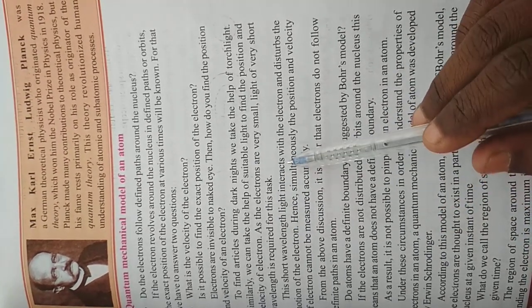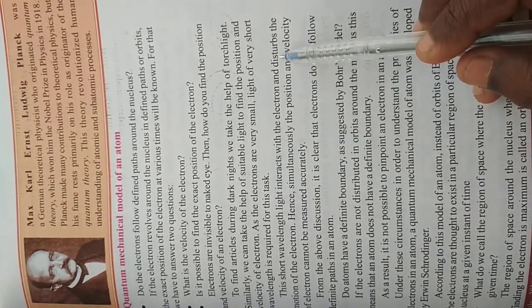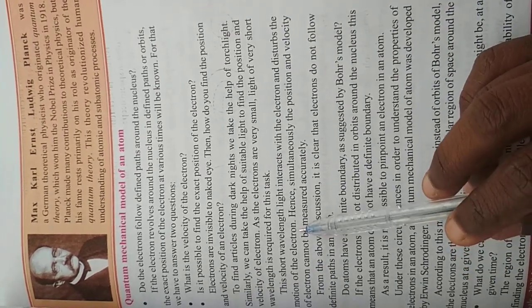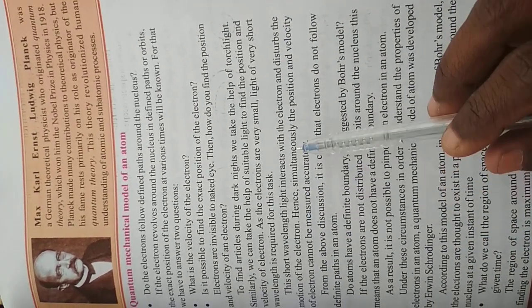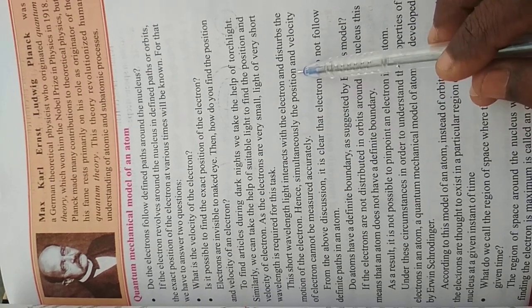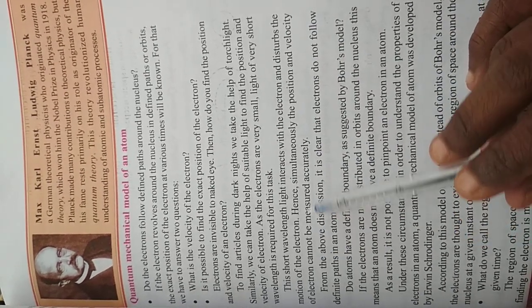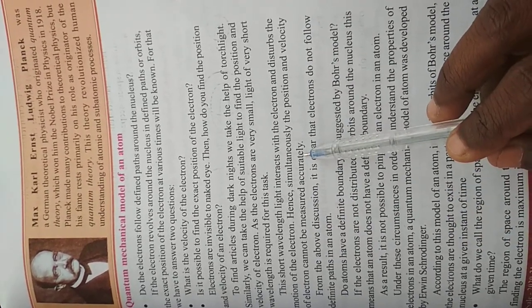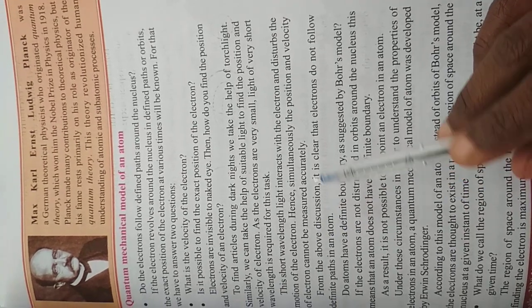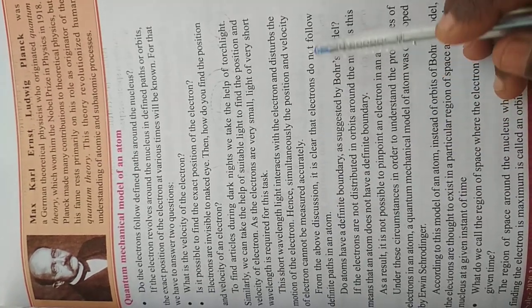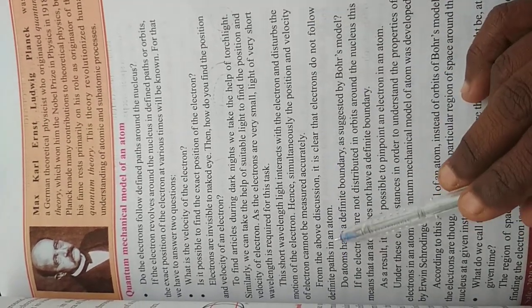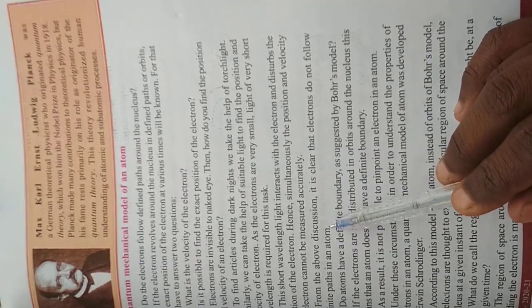This short wavelength light interacts with the electron and disturbs the motion of the electron. Hence, simultaneously, the position and velocity of an electron cannot be measured accurately. From the above discussion, it is clear that electrons do not follow definite paths in an atom.